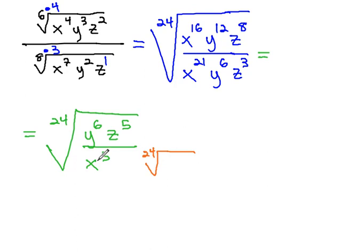So under the 24th root, we've already got 5 x's. We need 19 more x's to give us a total of 24 under the radical. We do the same thing in the numerator and denominator. 24th root of x to the 19th.